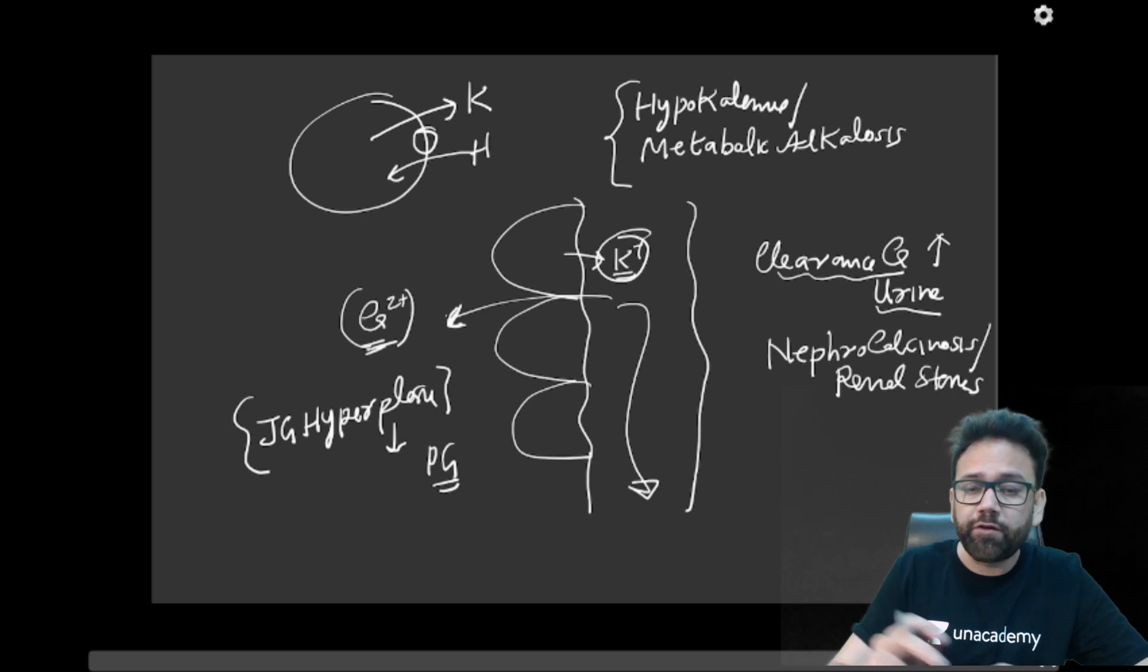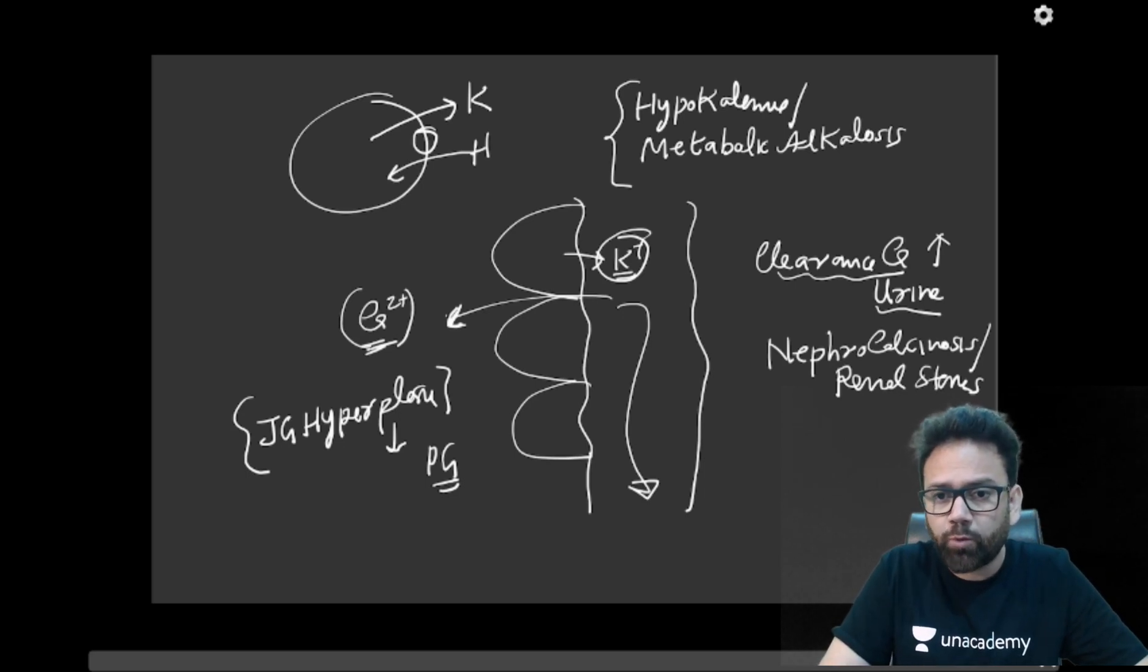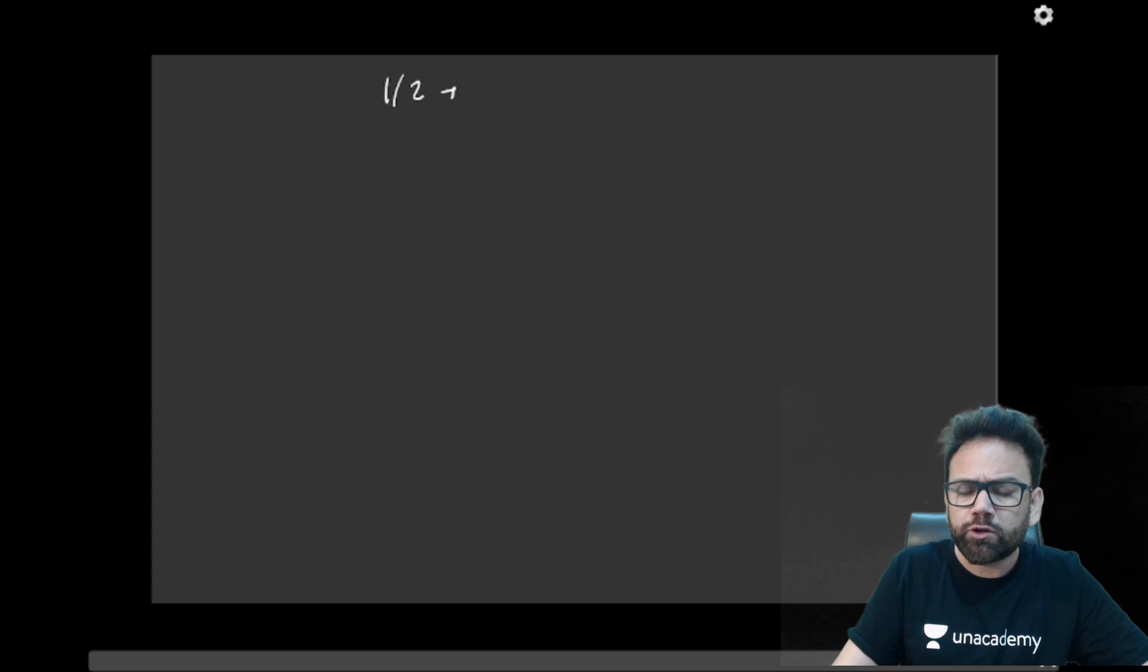After that, so we have discussed, there will be salt loss, water loss, polyuria, hypokalemia, metabolic alkalosis, increased clearance of calcium and that is causing the renal stones. Now, mainly type 1 and type 2 can be present in neonate or newborn. So they are having history of polyhydramnios.